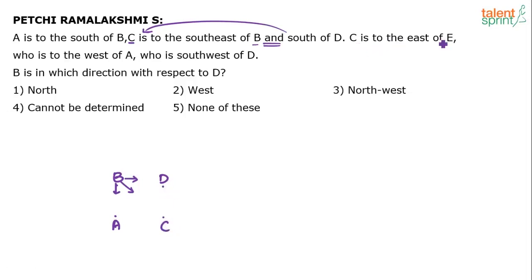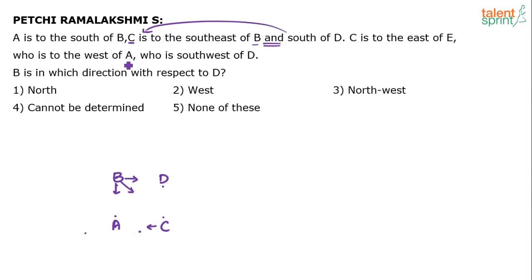Next statement: C is to the east of E, meaning E is on the west of C. Now the question says who is to the west of A — and 'who' refers to E from the previous statement. So E is to the west of A. Both conditions are satisfied: C is to the east of E, and E is on the west side of A.